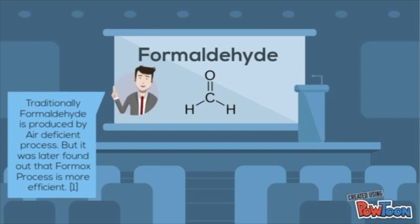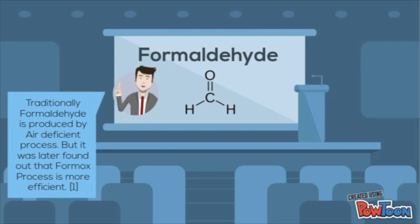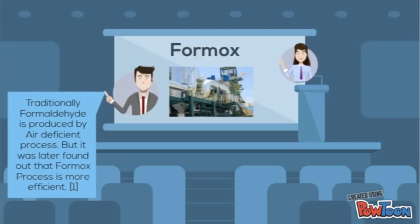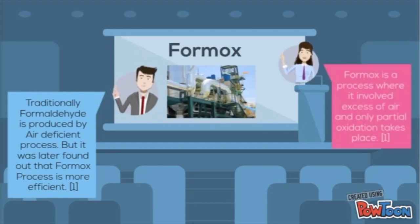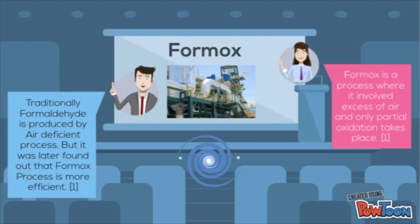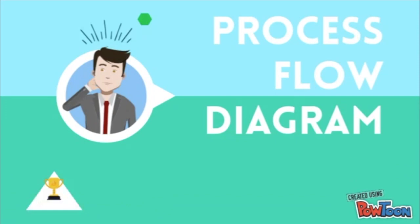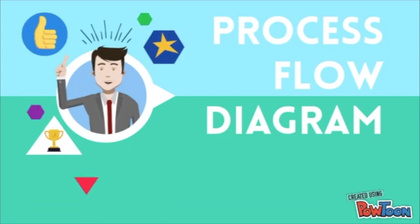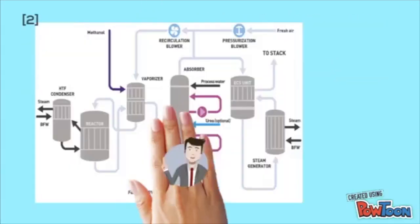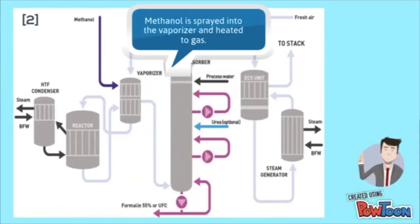Traditionally, formaldehyde is produced by the air deficient process, but it was later found that the formox process is more efficient. Formox is a process involving excessive air where only partial oxidation takes place.